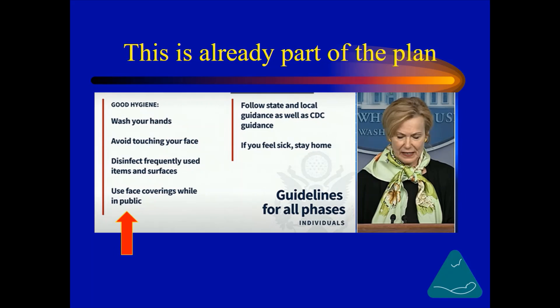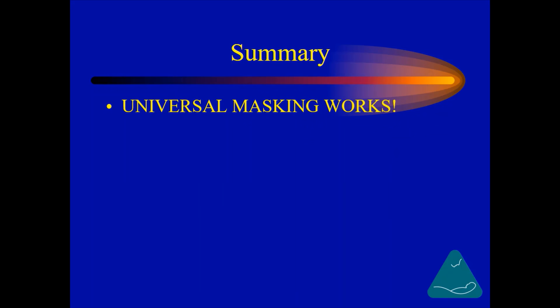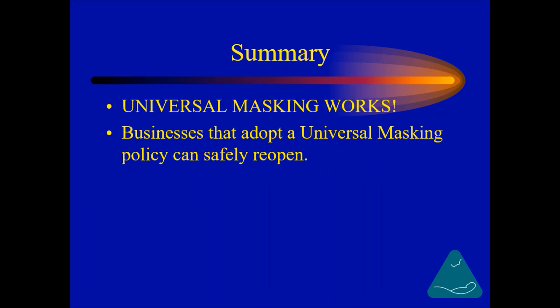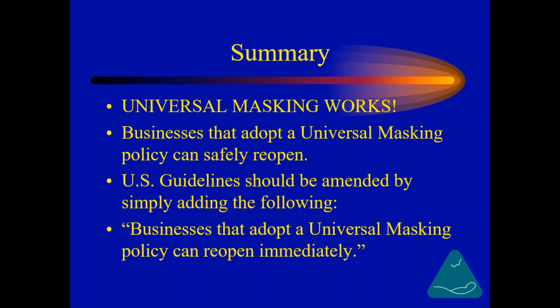The phased-in guidelines of the Trump administration are great — they just need to add one simple sentence: any business that implements a universal masking policy may open immediately. Let business owners and the free market figure out how to implement that policy. Actually, this is already part of the plan — the plan says that we should all use face coverings while in public. Any place outside of our homes is a public place: the grocery store, a restaurant, the movie theater, my dentist's office, the emergency room, Disneyland — any place other than your home where you could come closer than six feet to another person is a public place. All we need to start the economy immediately is to allow businesses that are able to institute a universal masking policy to reopen immediately. Universal masking works. Businesses that adopt a universal masking policy can safely reopen. U.S. guidelines should be amended by simply adding: businesses that adopt a universal masking policy can reopen immediately. I hope you enjoyed this video and found it informative — please share it with somebody and be safe.